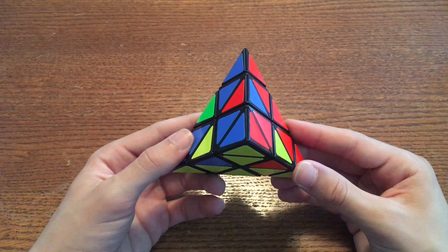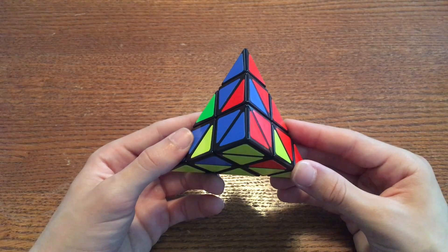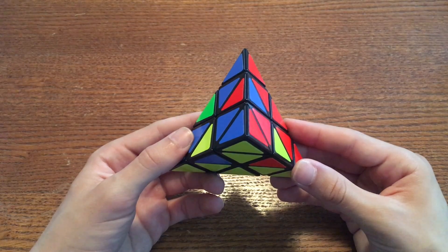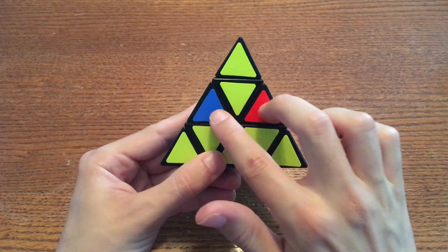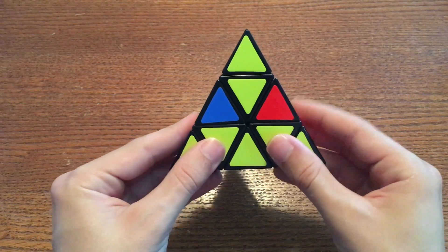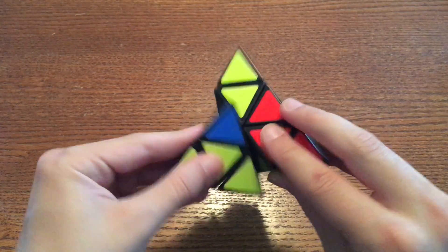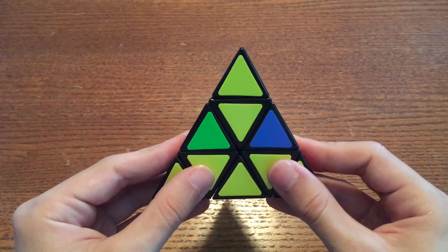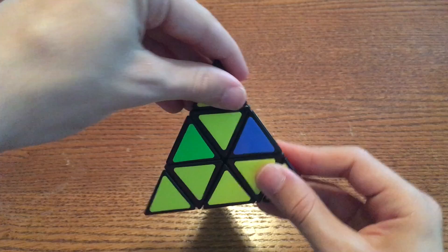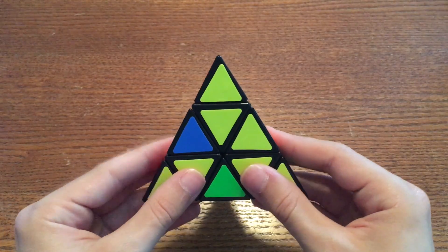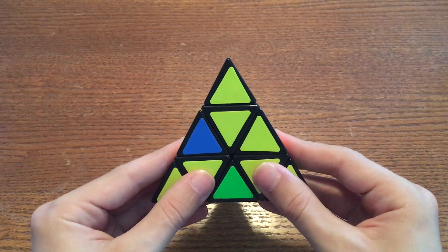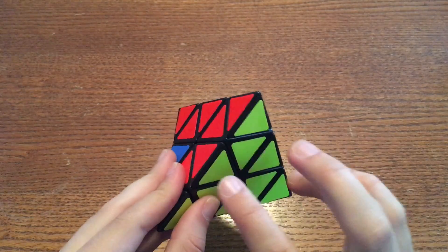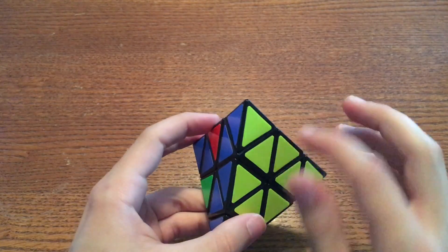Once all your edges are in the correct places, some of them may still be flipped incorrectly. Take two of these edges that are on the same face, do the algorithm with the right side first, then rotate the entire puzzle counterclockwise like this, then do the algorithm with the left side first.